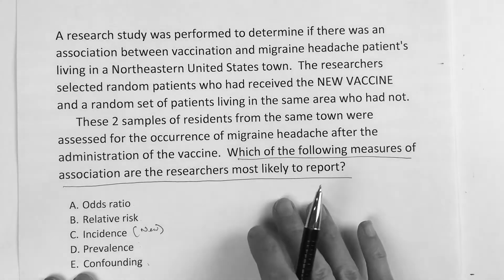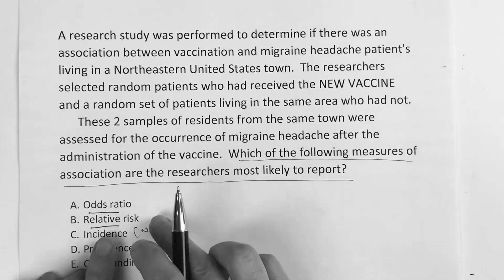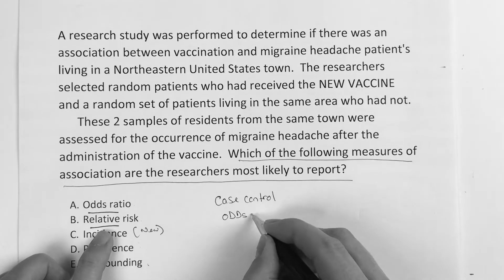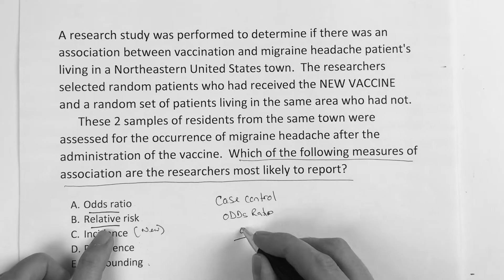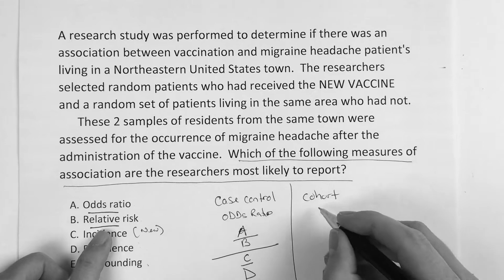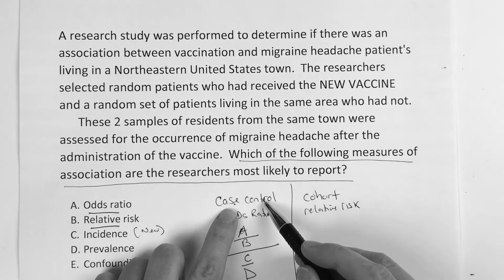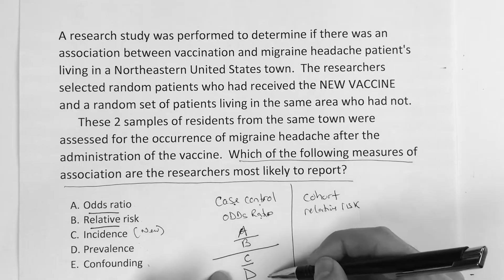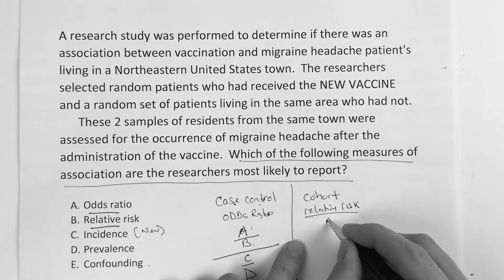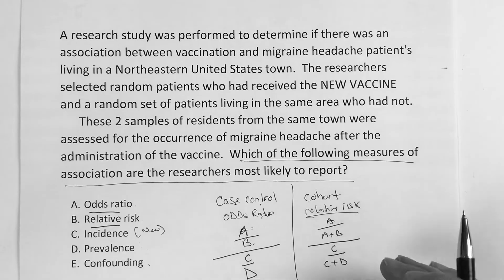So just to review: if you see the words case control, you should be thinking odds ratio — one number over one number. If you see the word cohort, you should associate that with relative risk — one number over another. Any time you see case control in a question, think odds ratio with that formula. If you see cohort anywhere or a description of a cohort, use relative risk. If you have trouble understanding that, go back to the original Biostats videos that explain this in more detail.